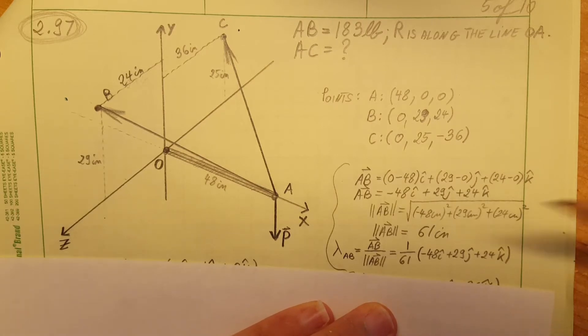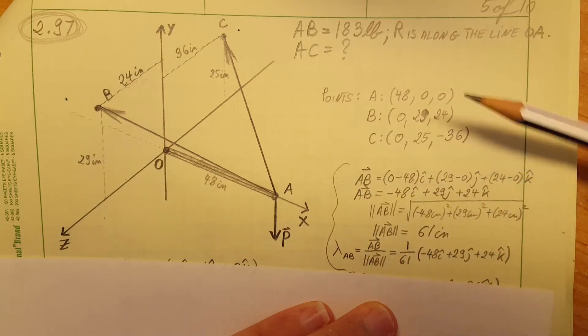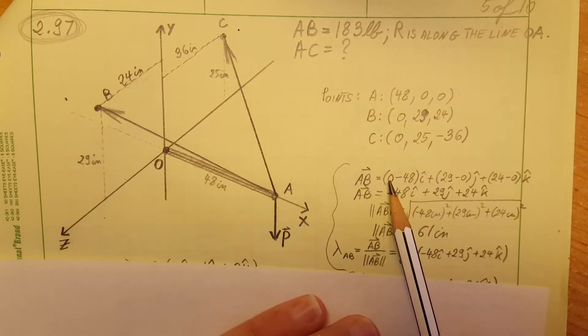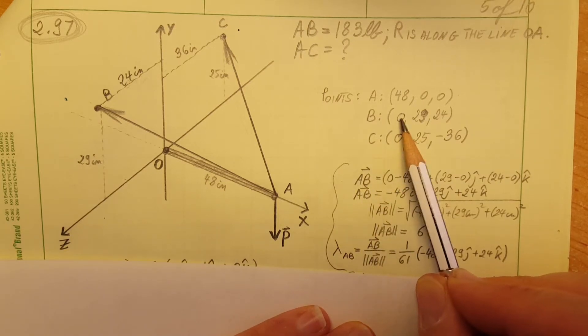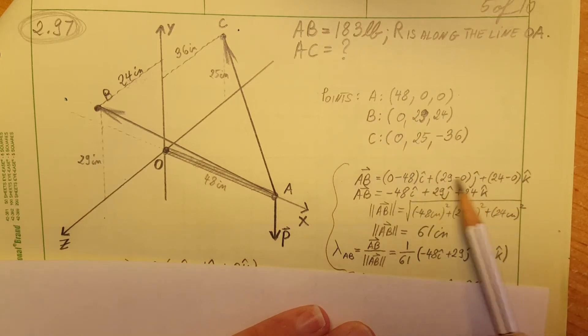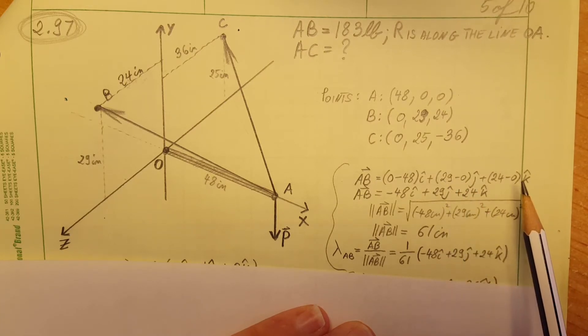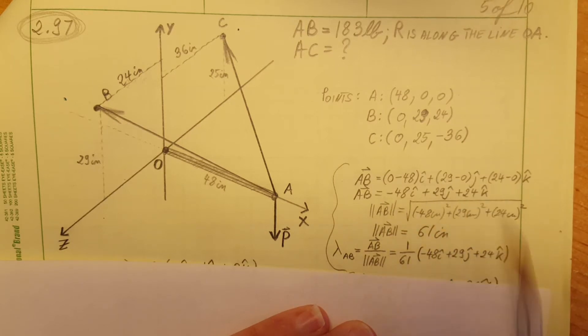We're gonna calculate the unit vector for AB. First we're gonna find the position vector from these values. AB means we're gonna look at 0 minus 48, B minus A, so the x of B minus the x of A. We're gonna do the same here: the y of B minus the y of A, the z of B minus the z of A. Here's our position vector.